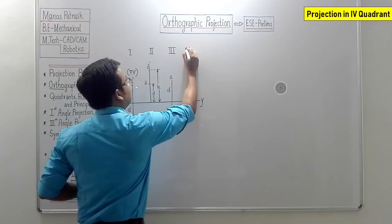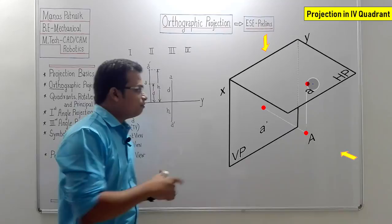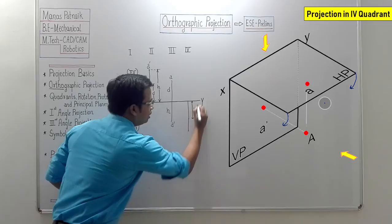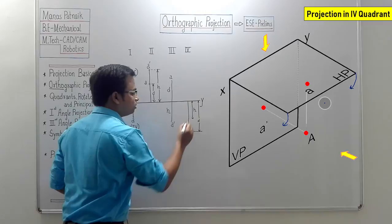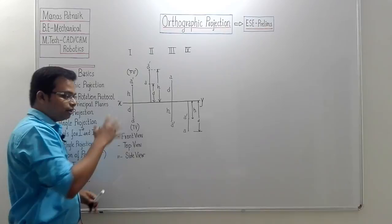Finally, the fourth quadrant — object is below HP and in front of VP. After taking the front view, top view, and rotating HP clockwise, we get a figure where h is one distance and d is another, both below the XY line. With h you put a dash, making it a'. This is the projection of a point in all four quadrants. Remember this — it will be really helpful to immediately solve problems and judge answers.